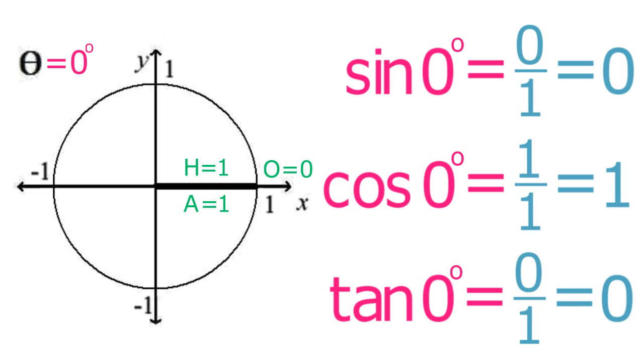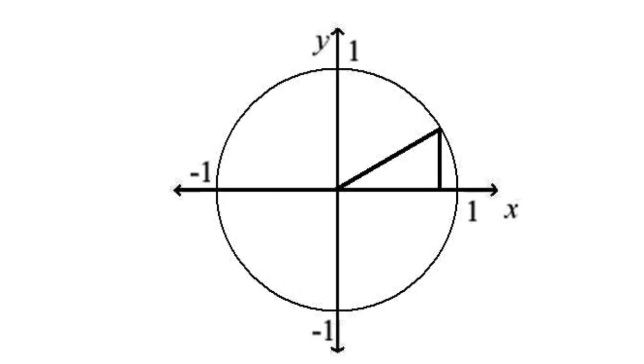In a similar way, we can create a meaningful abstraction for theta equals 90 degrees by imagining what happens to an embedded right triangle as theta approaches 90 degrees.